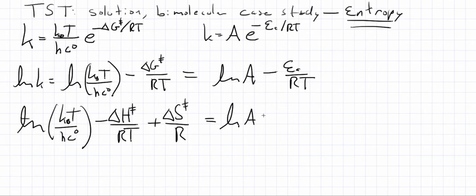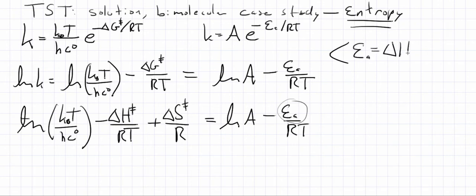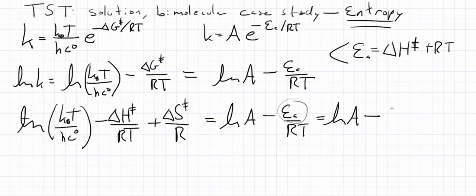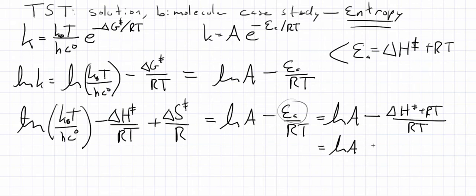When we equate these expressions, we can substitute the expression for Ea that we obtained earlier. For this type of bimolecular solution phase case, Ea equals delta H double dagger plus RT. Plugging that in gives us the log of A minus the quantity delta H double dagger plus RT, all over RT, which simplifies to log of A minus delta H double dagger over RT minus 1.